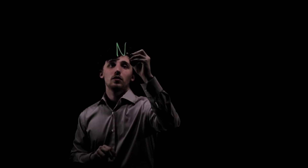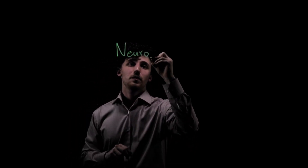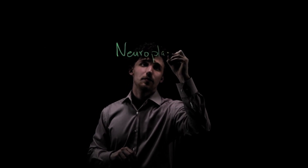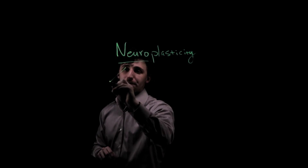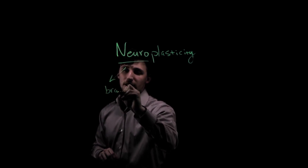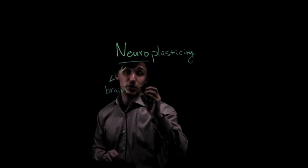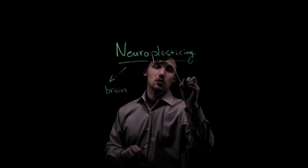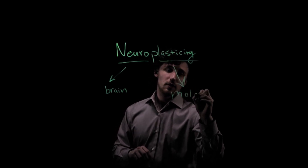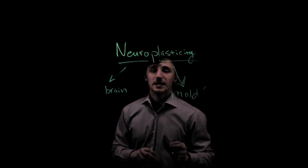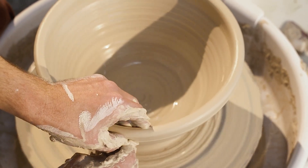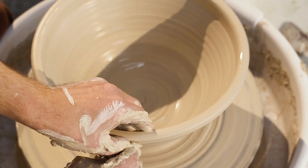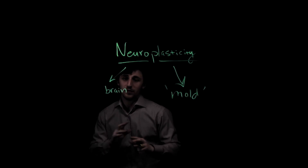Neuroplasticity can be divided into two parts: neuro, the first part of the word, and plasticity. Neuro refers to the brain; plasticity refers to the Greek word 'plasticos,' meaning to mold. It is literally the shaping or molding of your brain.